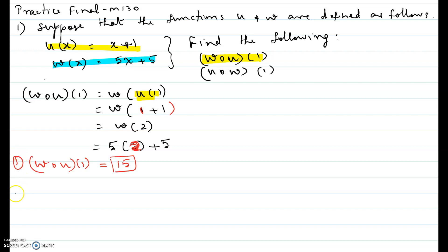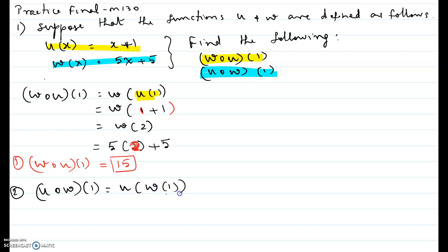Now for the second part: u composite w of 1. Here u comes first followed by w, so it is u of w at 1. We keep the u as is and evaluate the inside function. W at 1 means the second function where x is replaced by 1, giving us 5 times 1 plus 5, which is u at 10.